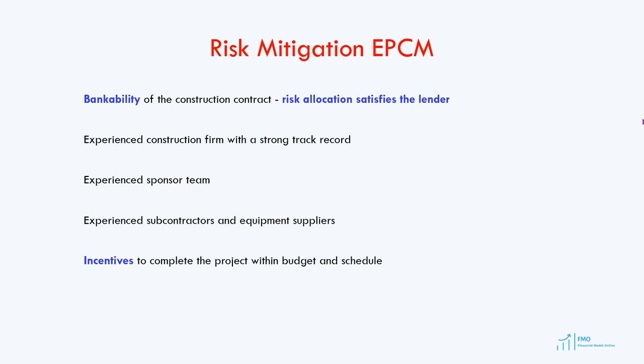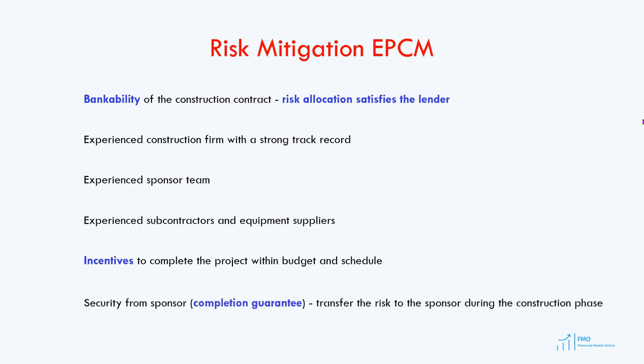However, with all these risk mitigation strategies, a significant construction risk will still remain under the EPCM contract. This means the lender will typically require security from the sponsor in the form of completion guarantees, cost overrun guarantees, and other guarantees that transfer the construction risk from the lender to the sponsor during the construction phase of the project.